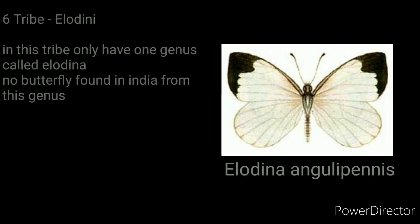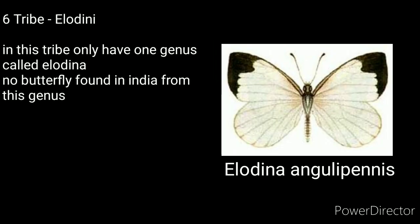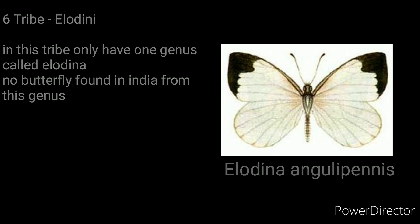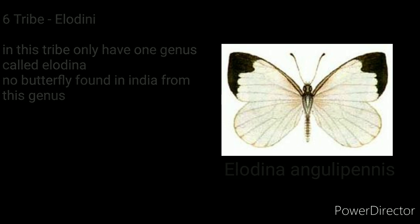The last tribe of the family Pierinae is tribe Allotini. This tribe has only one genus called Allotina, and no butterfly is found in India from this genus.